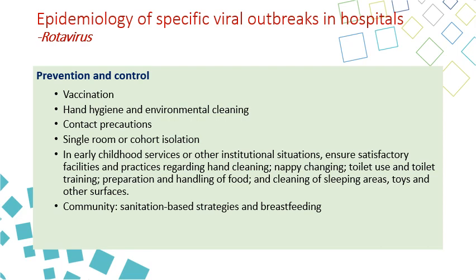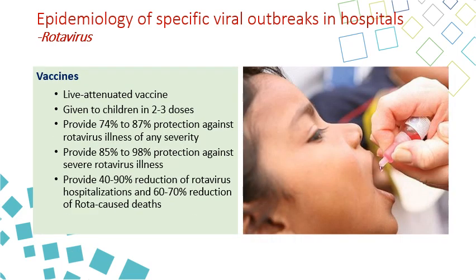In the community, rotavirus can be reduced by appropriate sanitation of food and water, and through breastfeeding. The rotavirus vaccine is a live attenuated vaccine given in two to three doses, and is now included in childhood immunization in most countries. It is very effective, providing 85 to 98% protection against severe rotavirus disease, and can reduce hospitalization by 40 to 90% and rotavirus-related deaths by 60 to 70%.